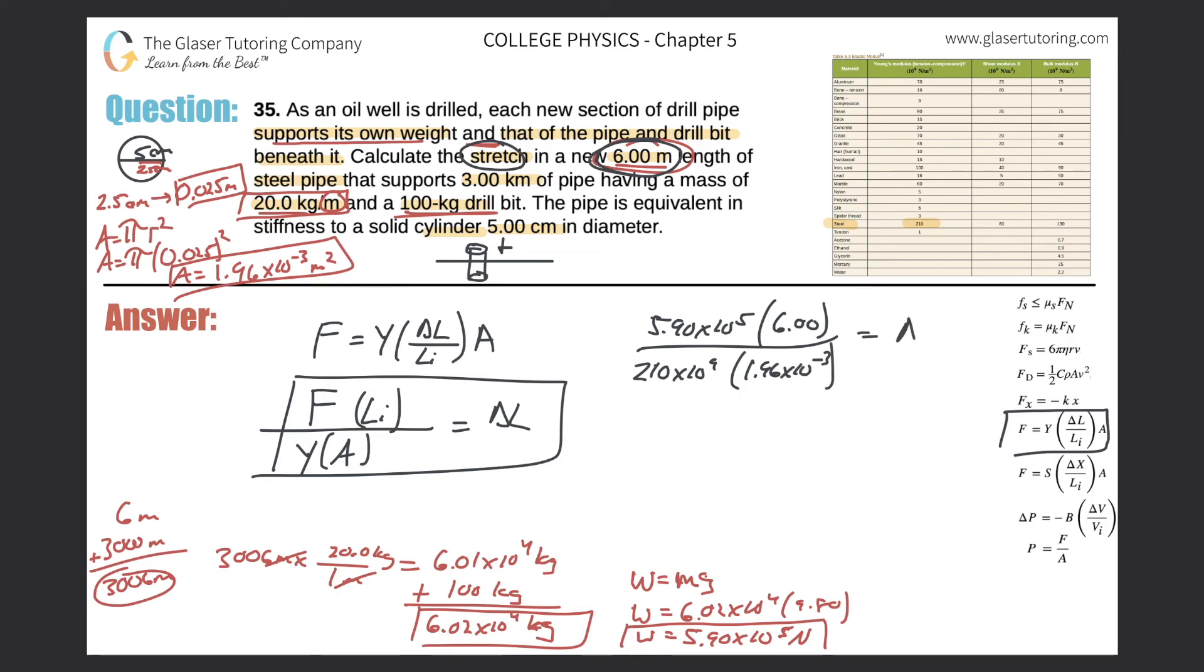Lo and behold we got everything we need to calculate the change in length. So now all we got to do is just plug it into the calculator. We get 5.9 times 10 to the 5 times 6 divided by the whole bottom in parentheses, 210 times 10 to the 9 multiplied by 1.96 times 10 to the minus 3. And here we go, we get a value of 8.6 times 10 to the minus 3, and that is in terms of meters, and that would be the same as 8.6 millimeters.